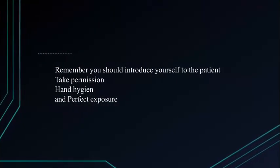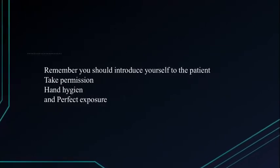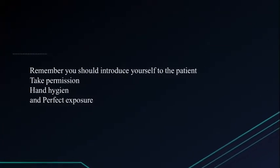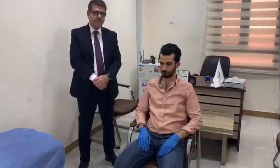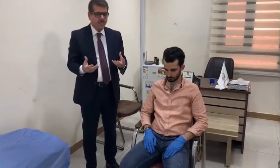Before you start examination, you should introduce yourself, take permission from the patient, perform hand hygiene, and ensure proper exposure. We are going to examine the thyroid gland. As you know, every gland has a hormone, and this hormone is either normal, hyper, or hypo. In each condition the examination may be different. The examination of the thyroid consists of four parts: examination of the neck for the size of the thyroid gland, examination of the eyes in Graves' disease, examination of the hand, and examination of the leg also in Graves' disease.